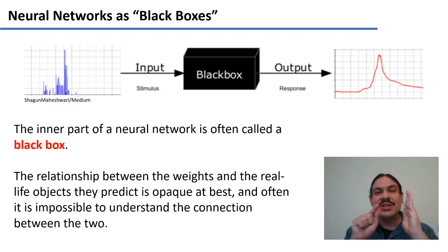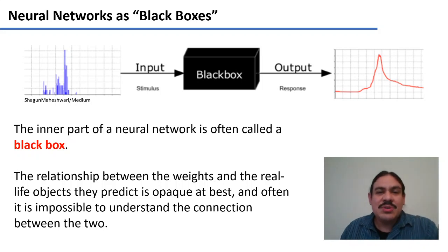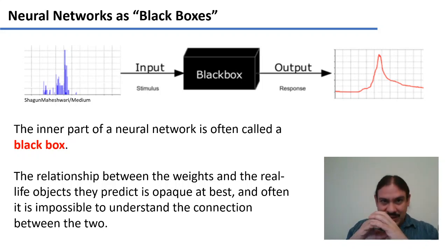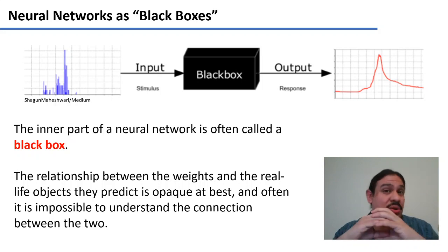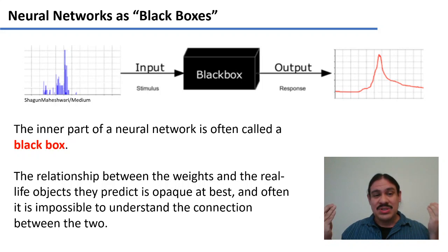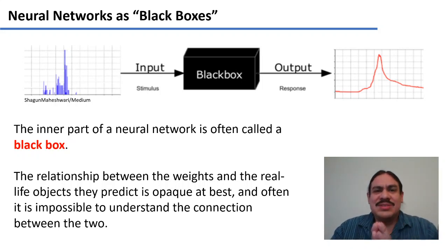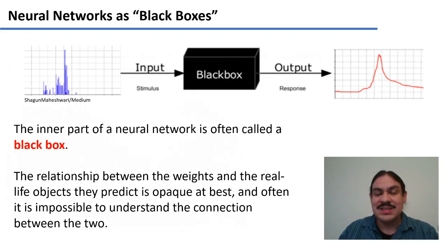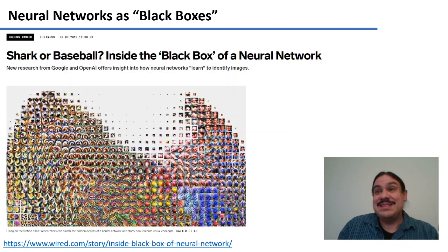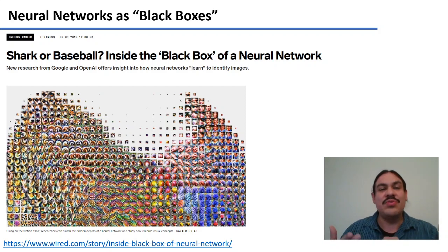Is it learning a feature of the input, and if so, what feature? The connection between the weights, the hidden layers, and all the internal parts of the neural network — between those and the inputs and outputs — is opaque at best. It is often impossible to understand exactly what a neural network is doing. This might make them seem like magic — they're just doing their thing — but we really don't understand what rules they're following other than doing crazy arithmetic.